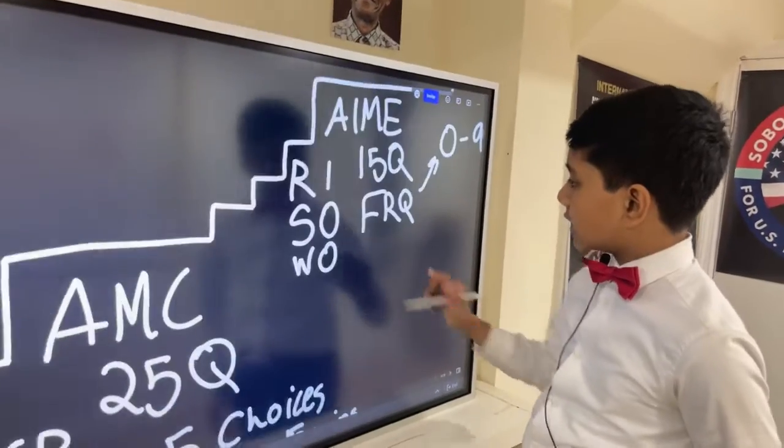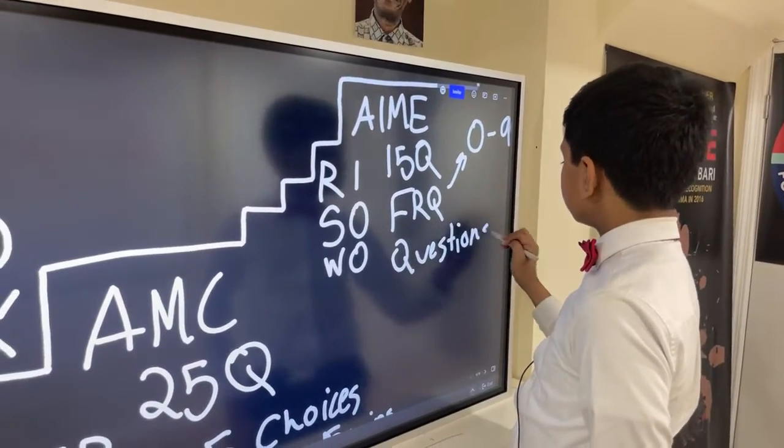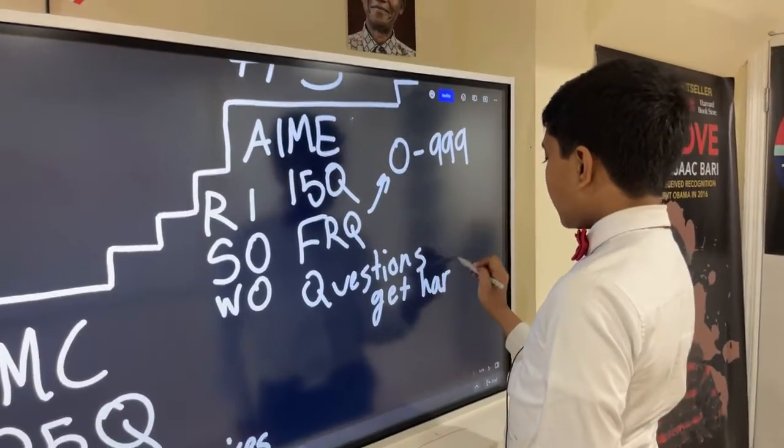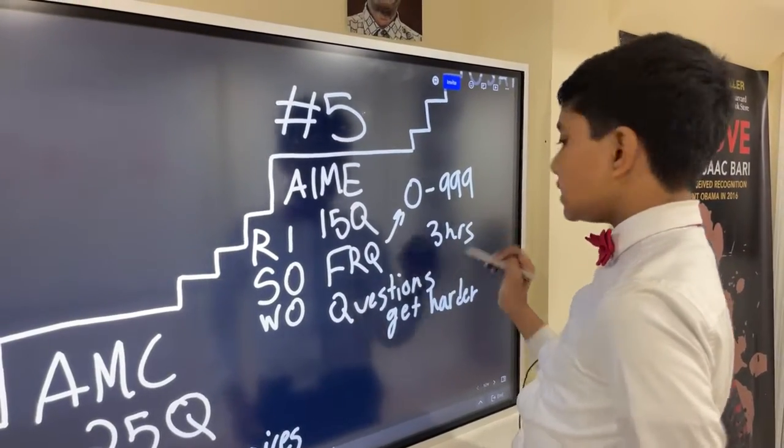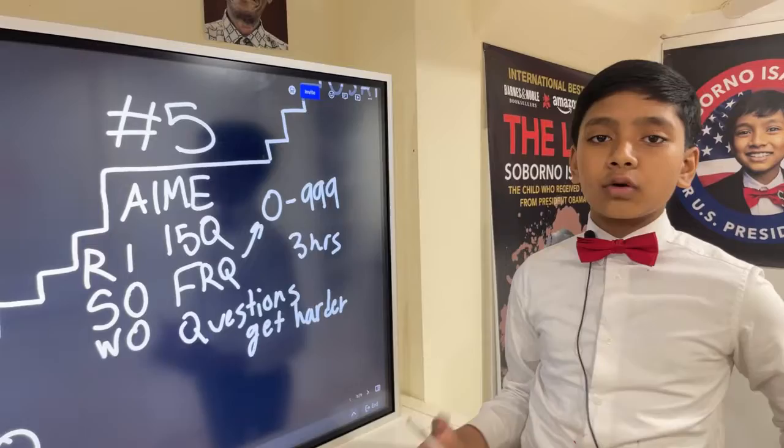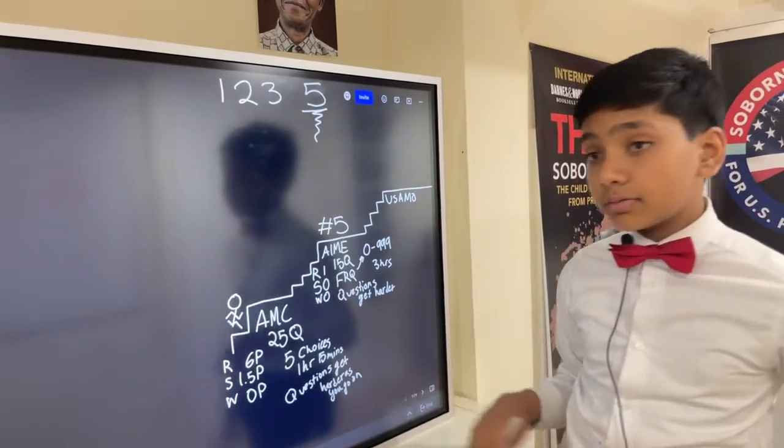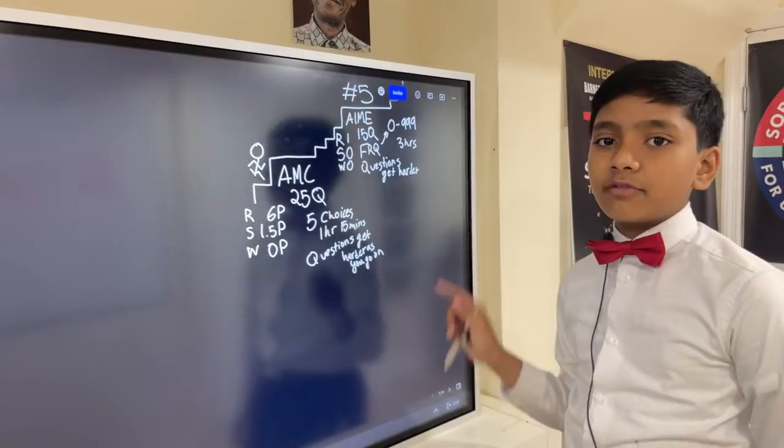And just like the AMC, the questions get harder as you go on. But unlike the AMC, oh yeah, and they give you three hours. Unlike the AMC, the AIME's problems are way more difficult. So AIME problem 5 would already be like AMC problem 15. So I'm going to be doing AIME problem 5 today.